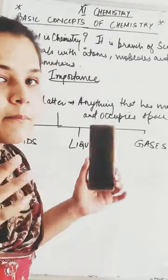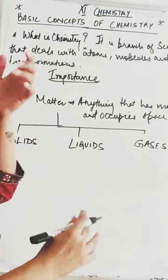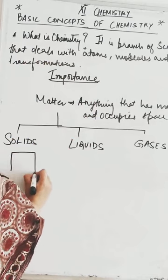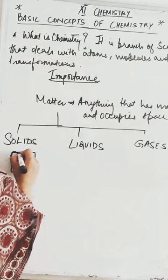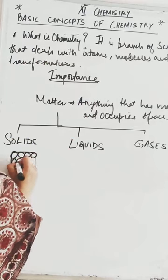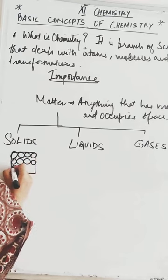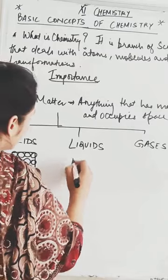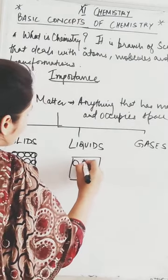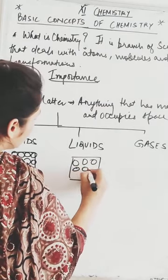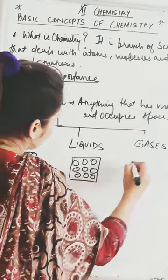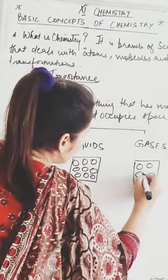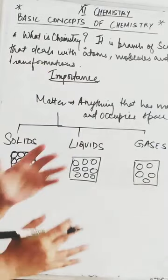Let me draw the molecular structure to show how a solid looks. In solid, the particles are very tightly packed. In liquid, the particles have a little bit of freedom to move here and there. And if we talk about gases, the particles are completely free to move here and there.